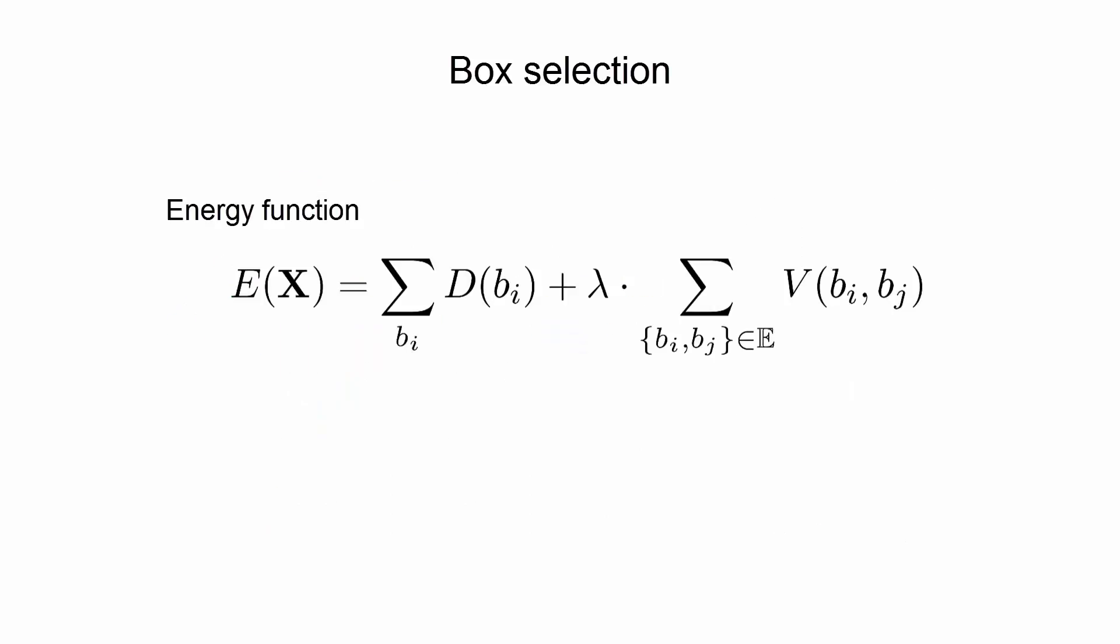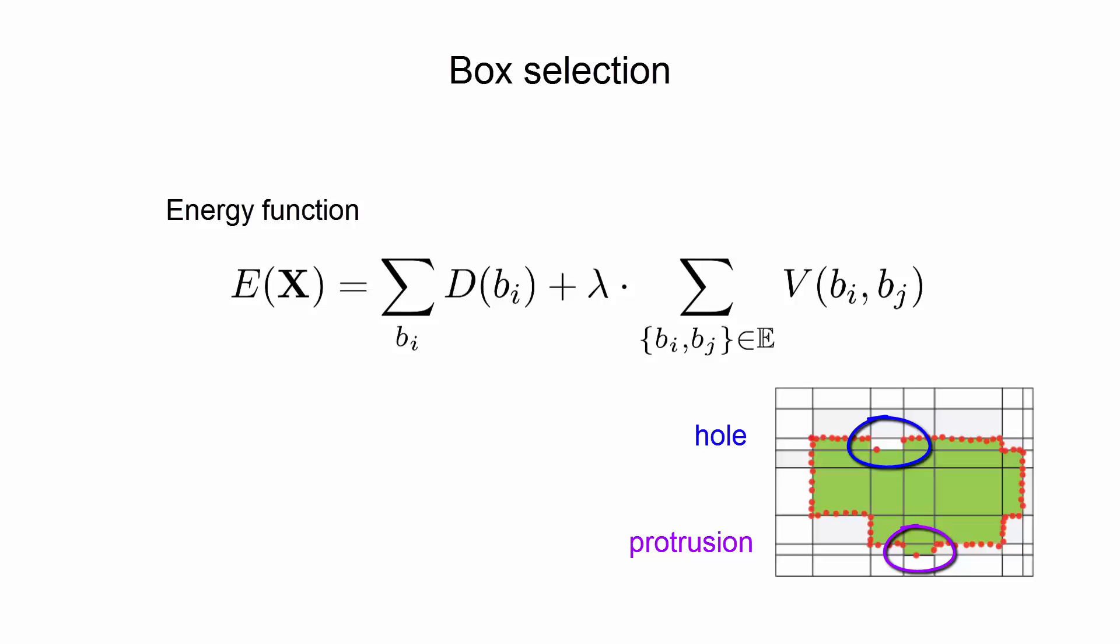Our energy function consists of two terms. The data term measures how well a candidate box BI is supported by the point samples, and the smoothness term measures the compactness of the final model. In other words, it penalizes holes and protrusions.